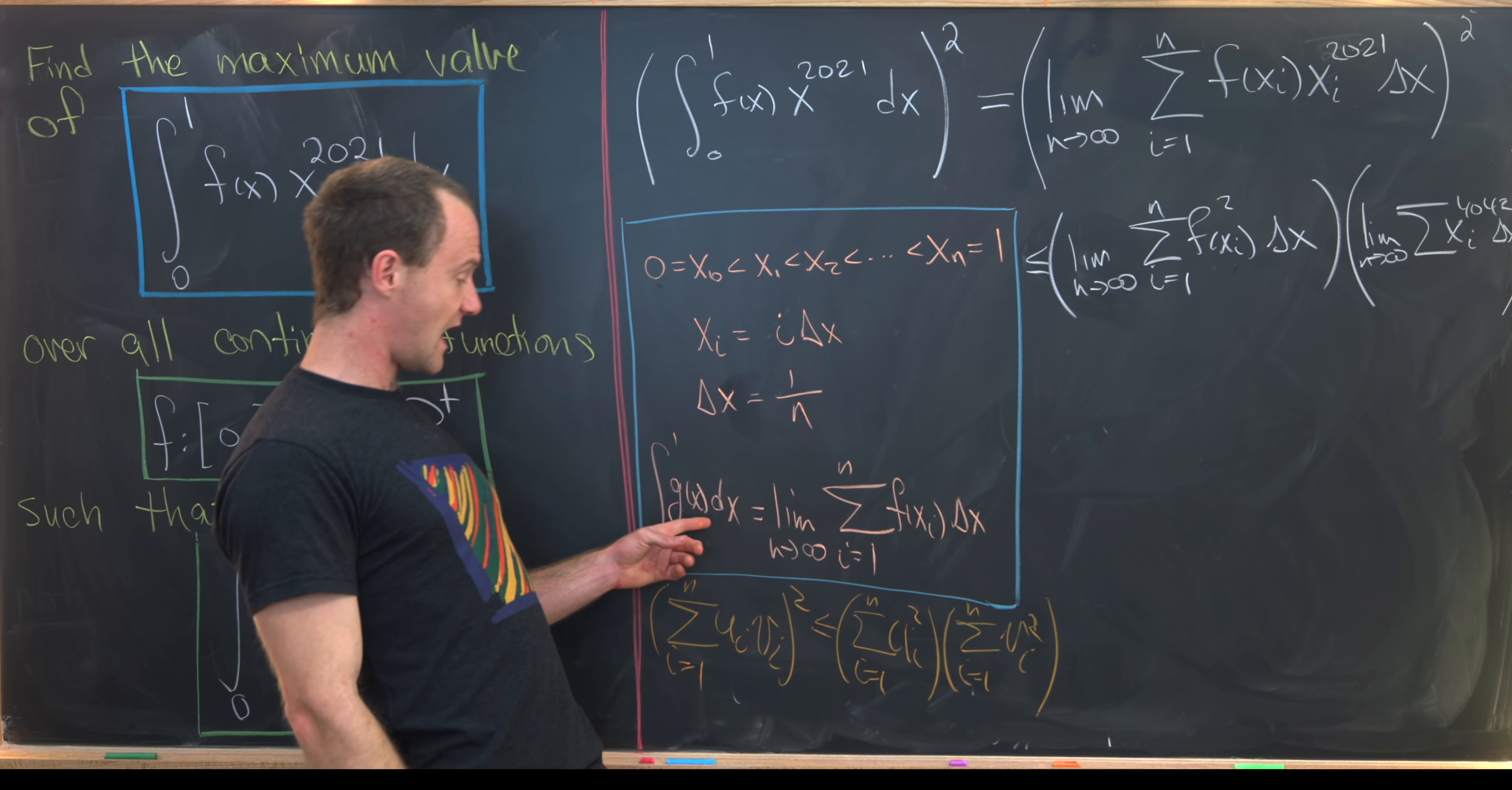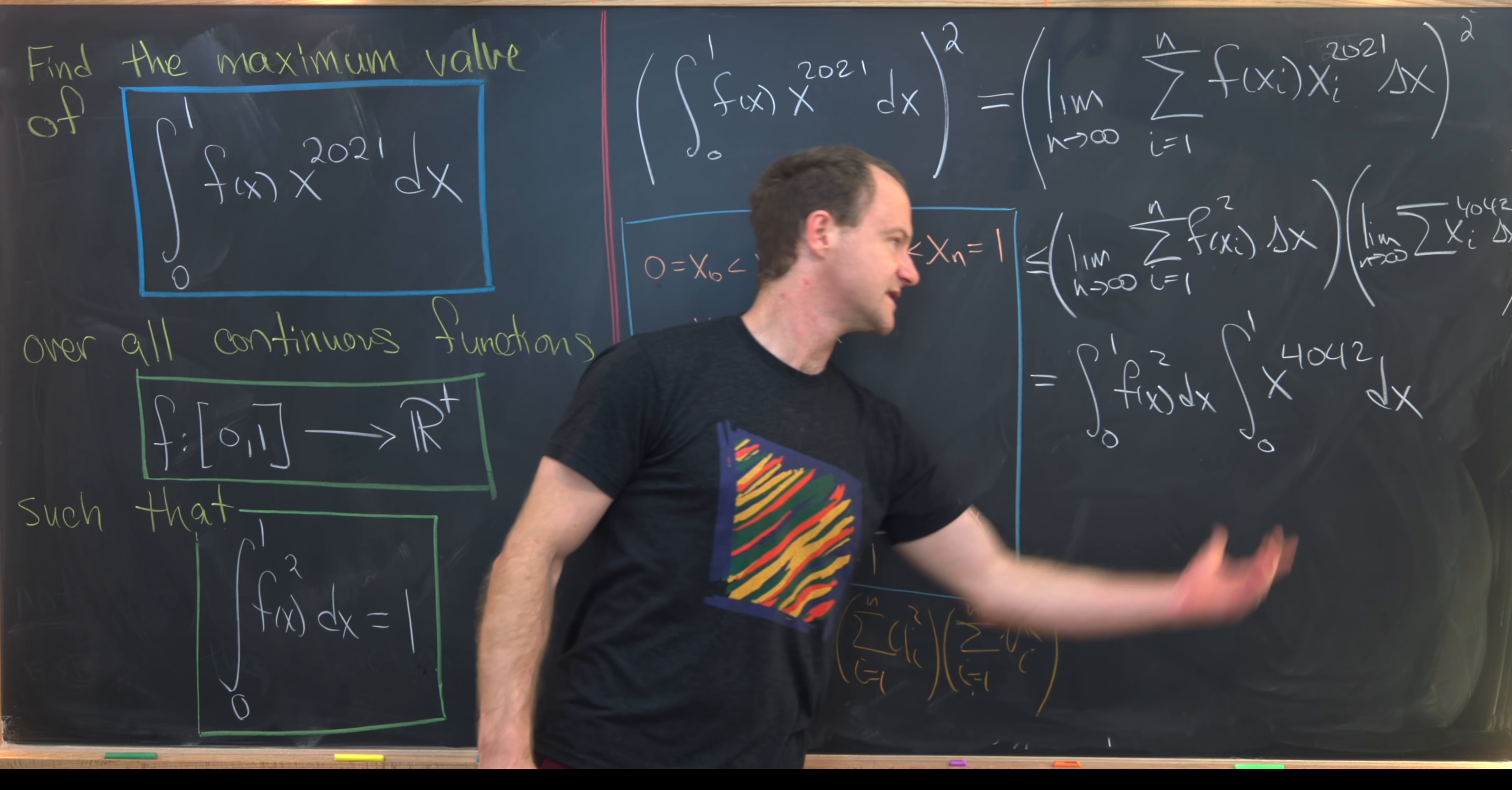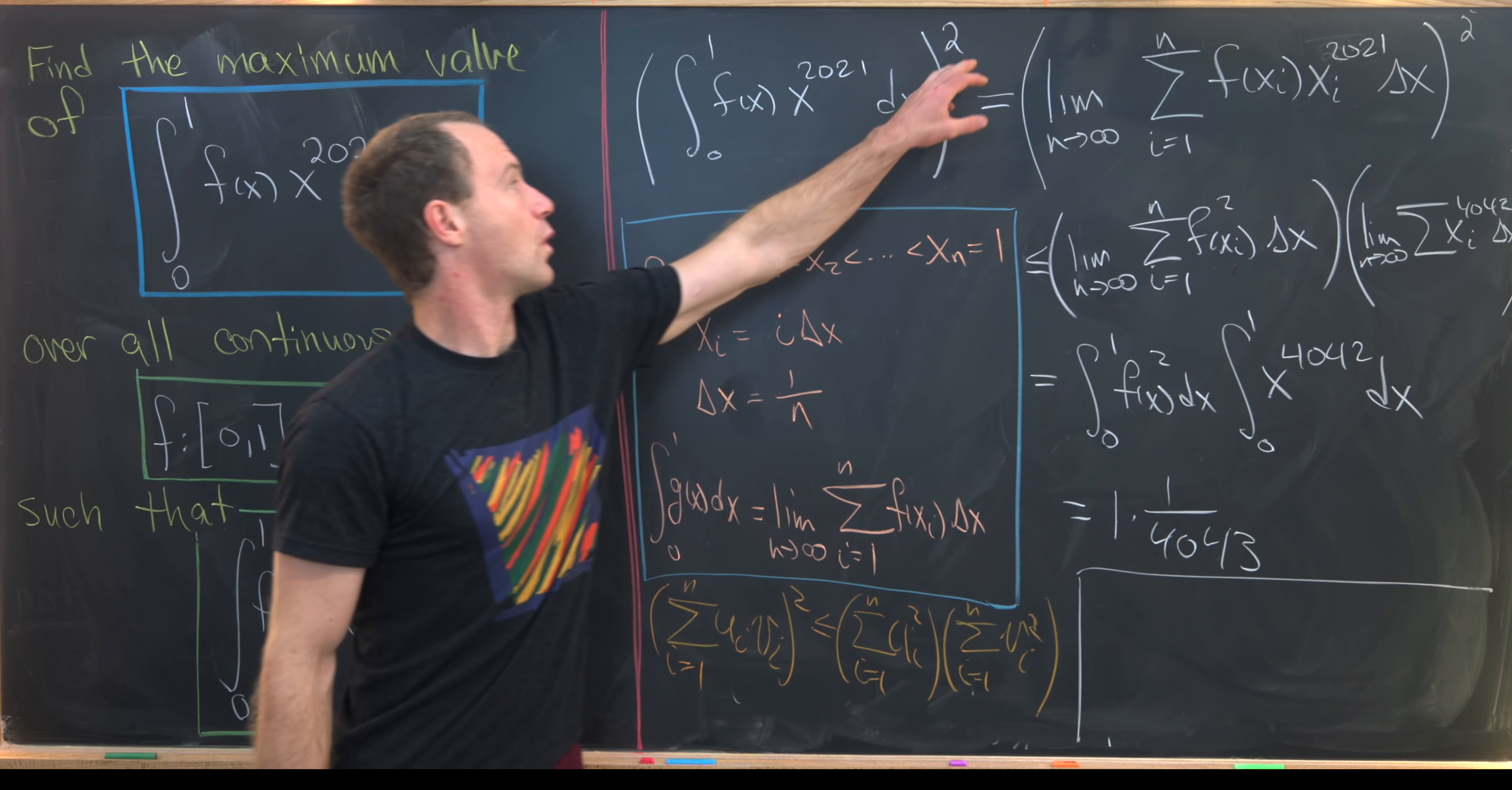But now we can apply this formula in reverse, and we'll see that we have the integral from 0 to 1 of f(x) squared dx times the integral from 0 to 1 of x to the 4042 dx. But we're given this integral is equal to 1, and then this is pretty easy to calculate. So that gives us 1 times 1 over 4043, because we increase the exponent by 1, divide by the new exponent, and then plug in the endpoints.